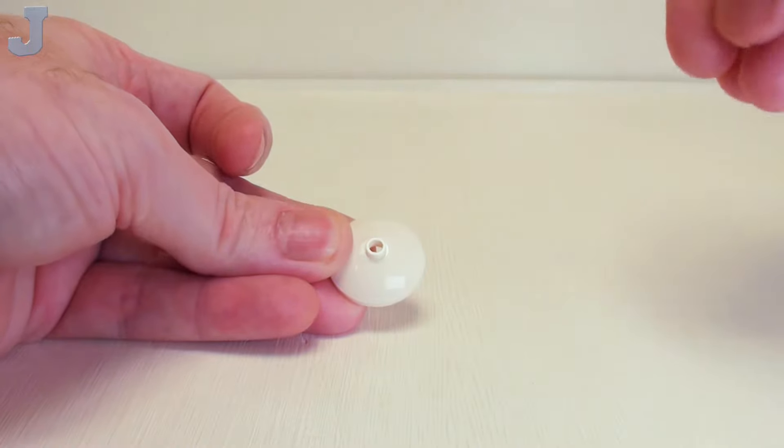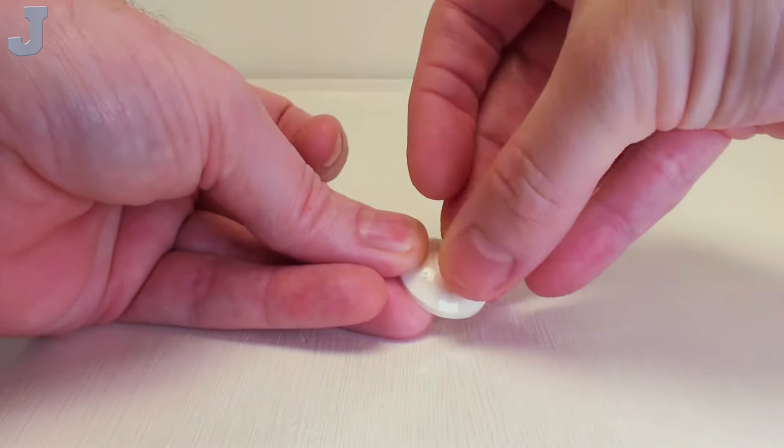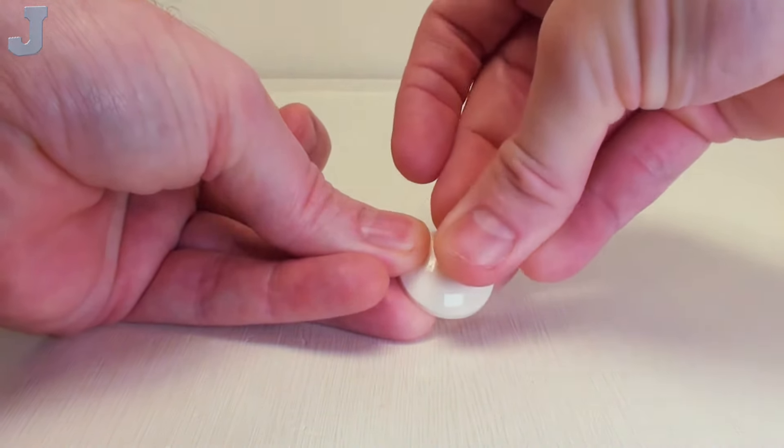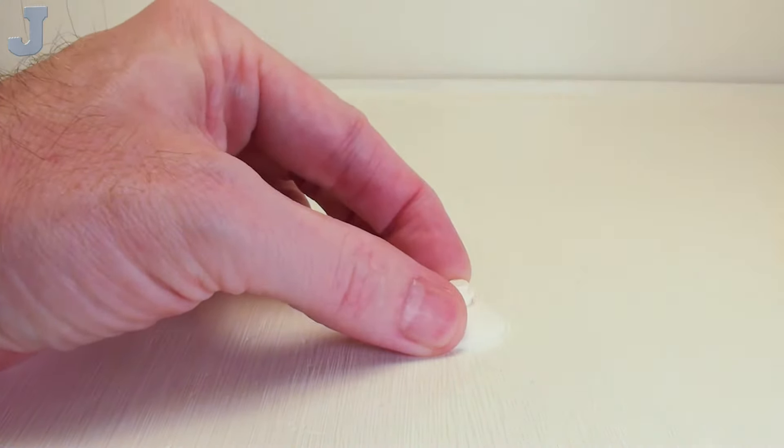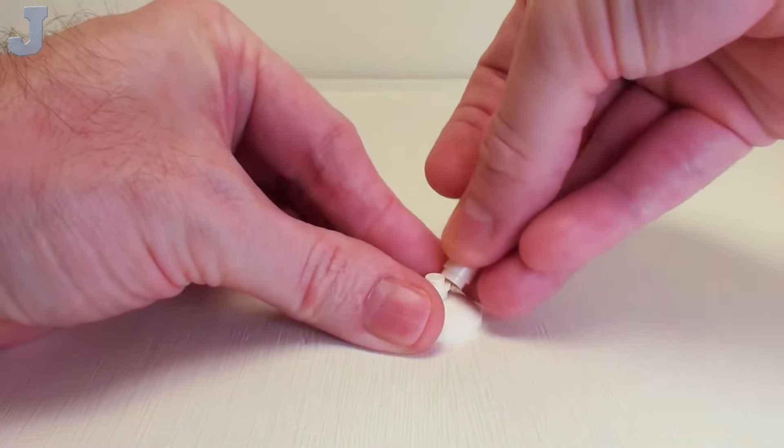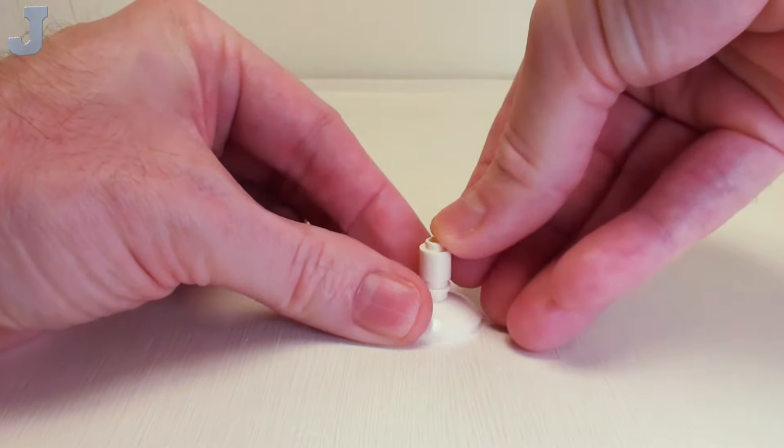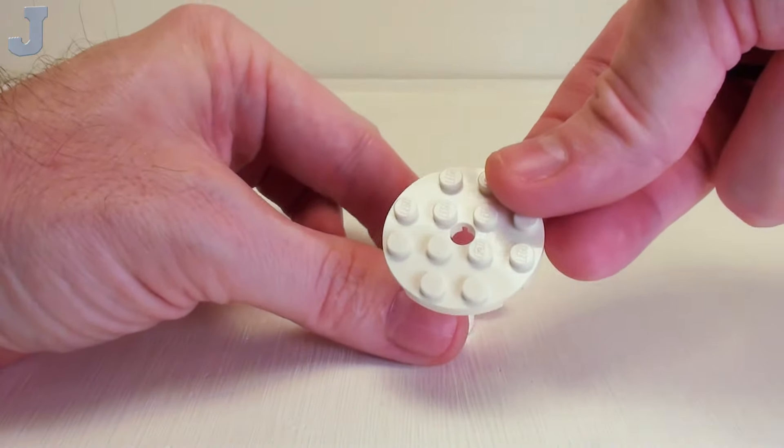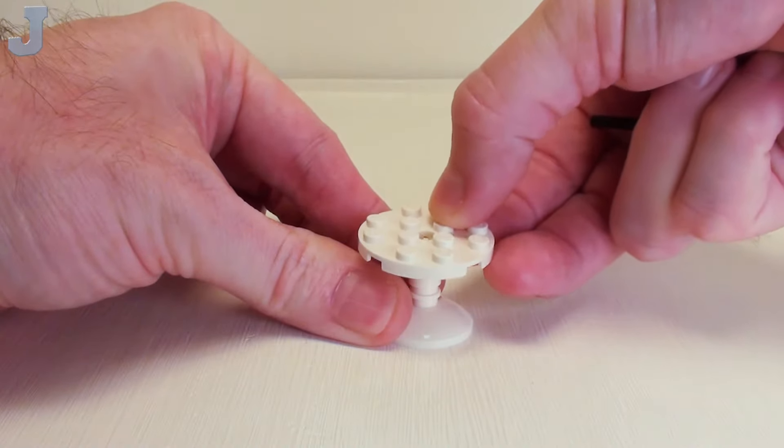For the patio table, start with a 3 by 3 parabola dish. I'm going to place a stud right on top of that stud, and a 1 by 1 round brick right here. Then for a tabletop, a 4 by 4 round plate.